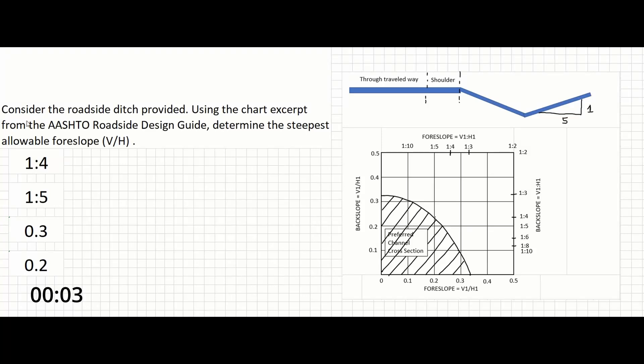Consider the roadside ditch provided. Using the chart excerpt from the AASHTO roadside design guide, determine the steepest allowable foreslope in units of vertical slash horizontal.